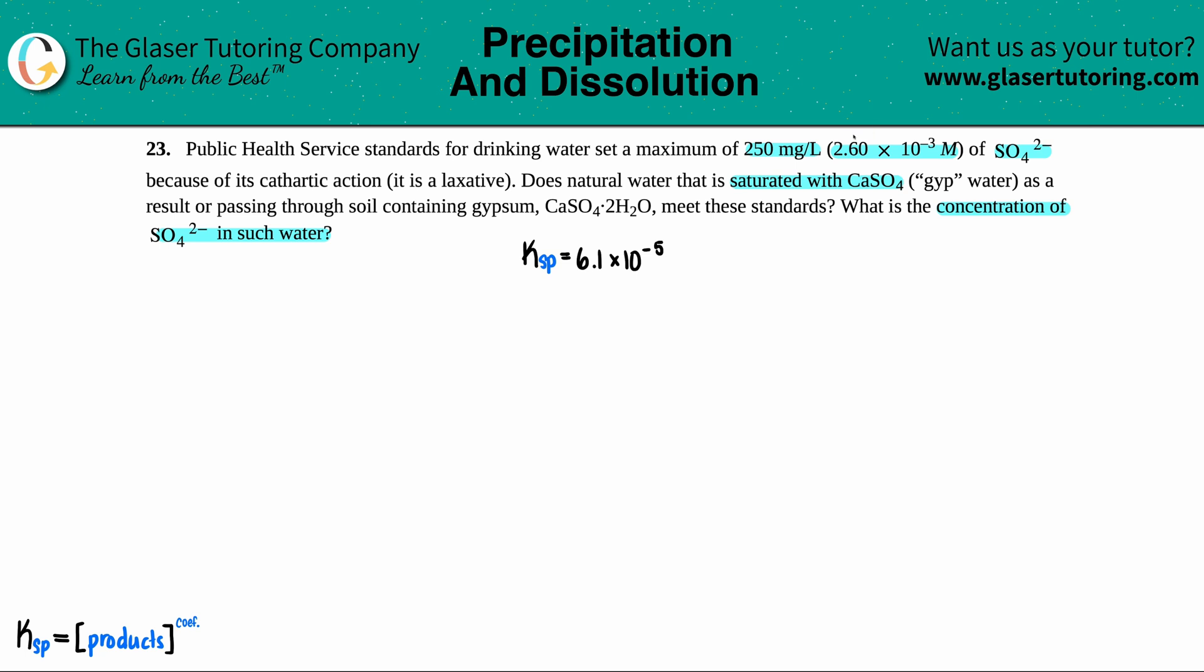So the max concentration that you can have in your water for sulfate is 2.6 times 10 to the negative third molarity. Anything below this number, you're not going to go to the bathroom, but anything above this number, yeah, you're going to be in the bathroom. But anyway, basically we just have to find out that number.